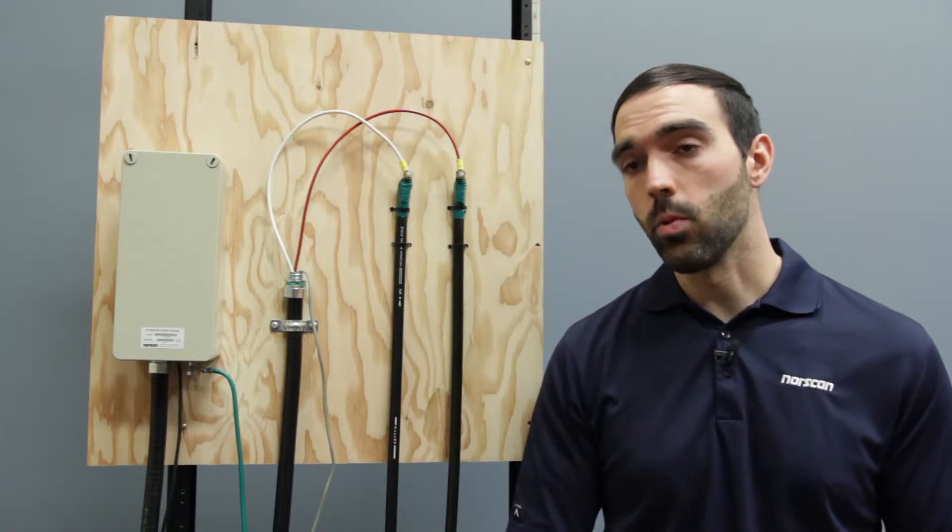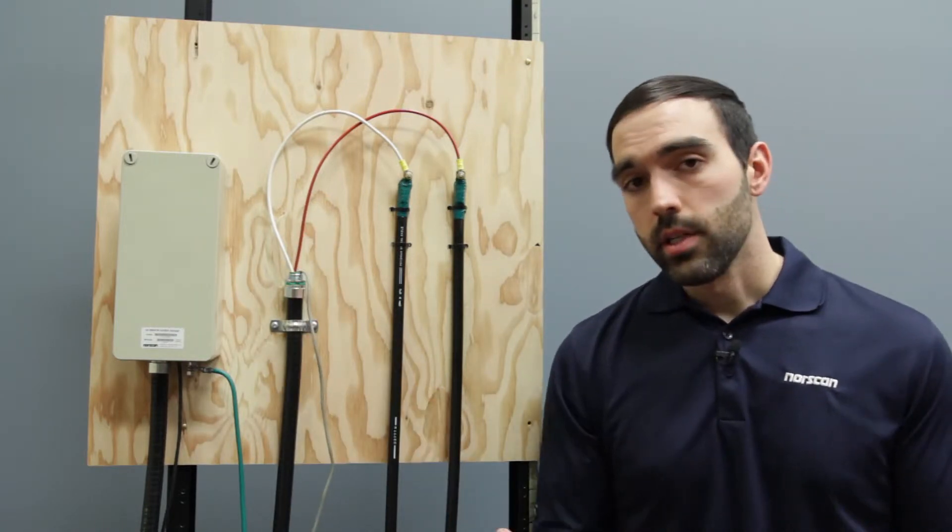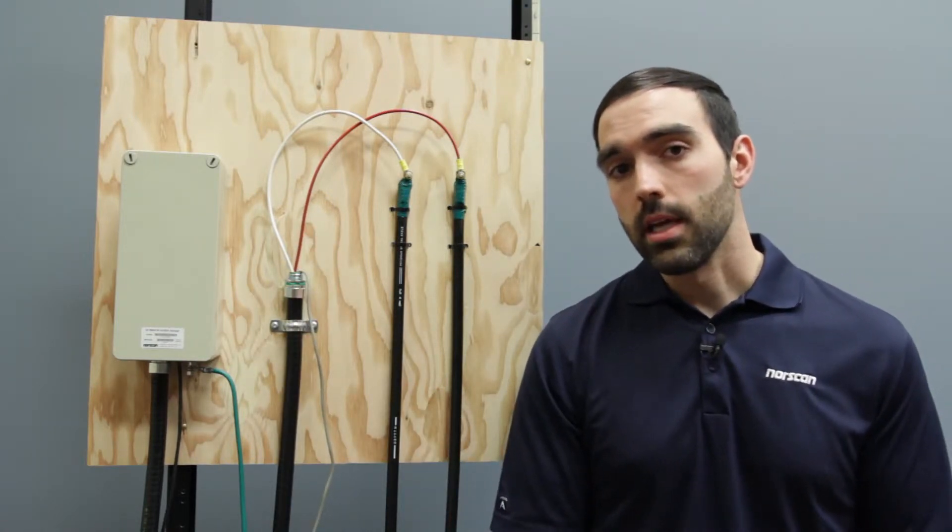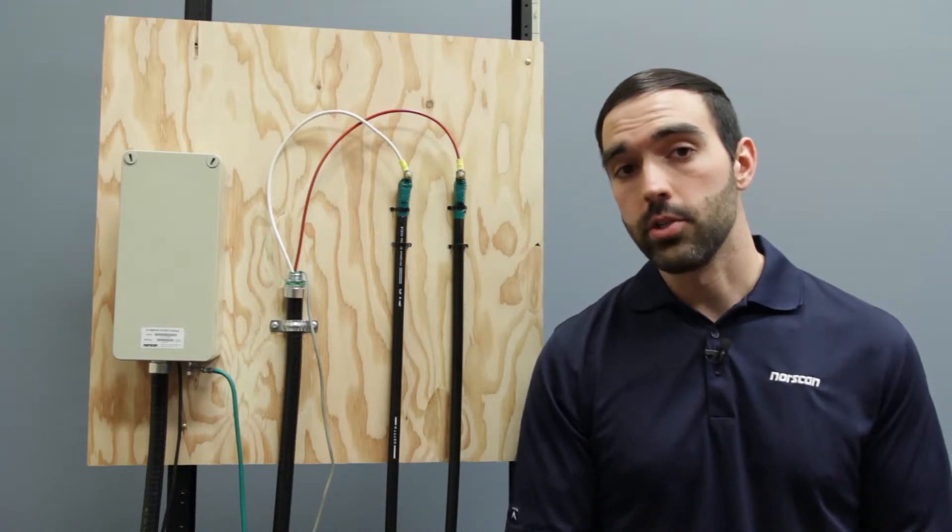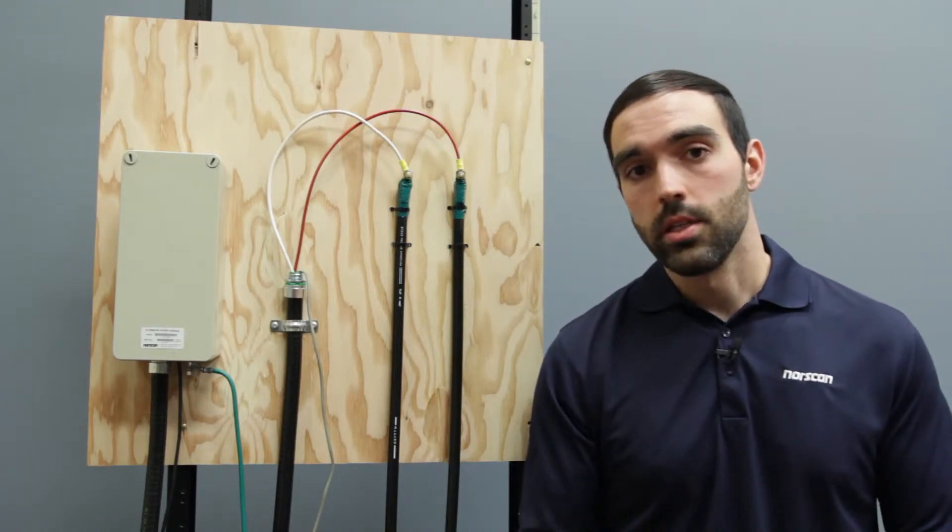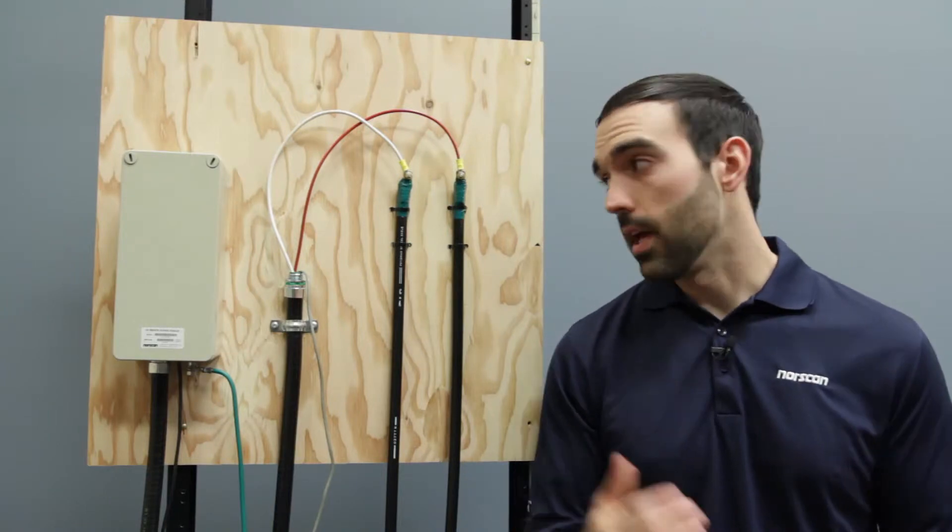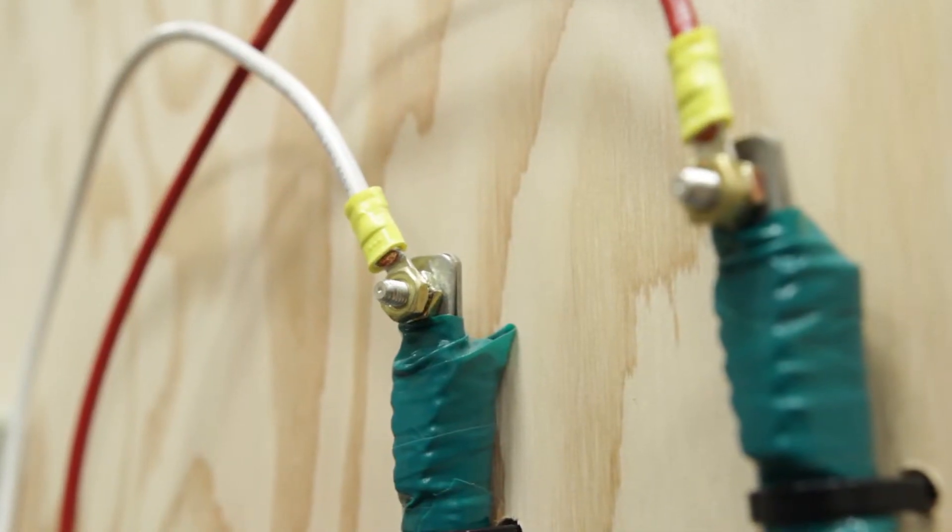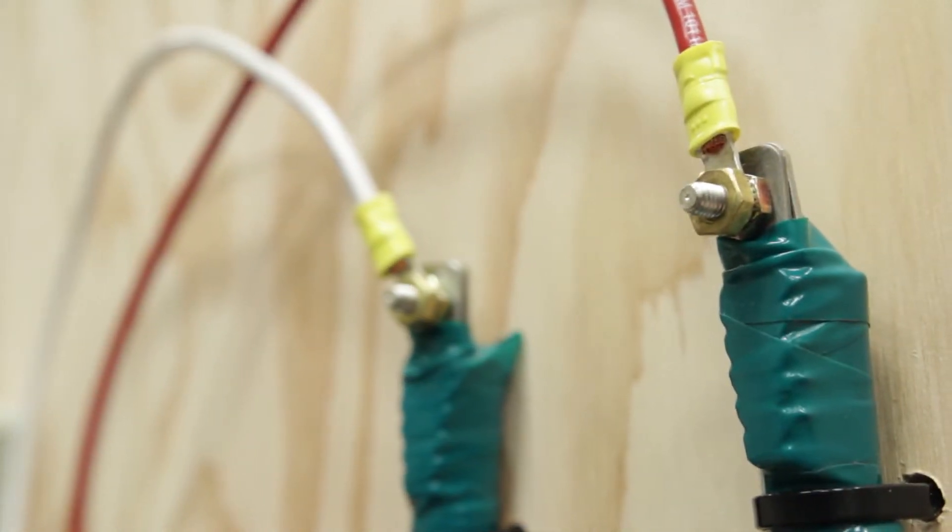Next we'll be installing the red and white CoRAM lead. Here your installation process will vary depending on how many cables you have coming in. If you have just one cable coming in, secure both the red and white lead to the single cable, or if you have two like we do here, secure the white to one cable and the red to the other.